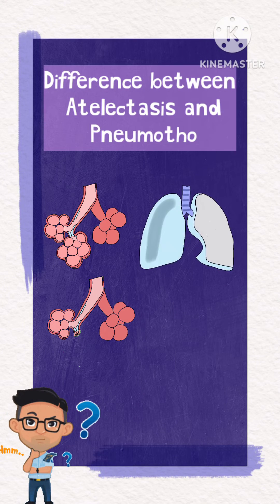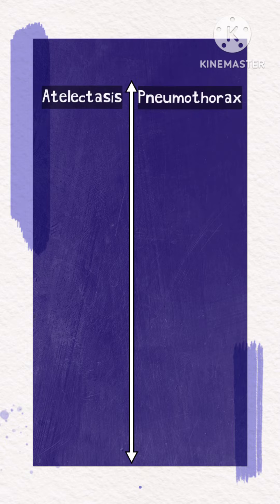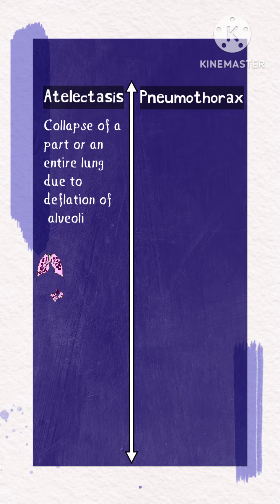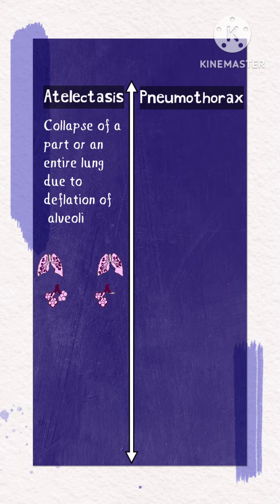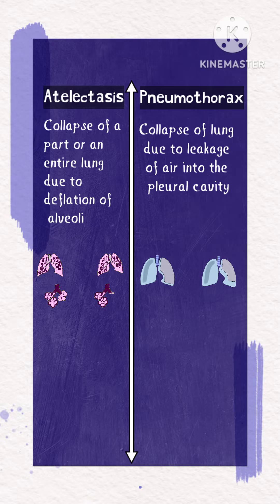The difference between atelectasis and pneumothorax: atelectasis is defined as the collapse of a part or an entire lung due to the deflation of the alveoli, while pneumothorax is defined as the collapse of the lungs due to leakage of air into the pleural cavity, i.e., the space between the lungs and the chest walls. There are two things observable in these definitions.